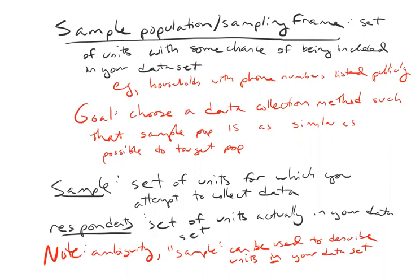It's even more confusing if you just post a link on Facebook. The particular labels you put on each of these steps are less important than your understanding of how representativeness might change as you go through these steps.